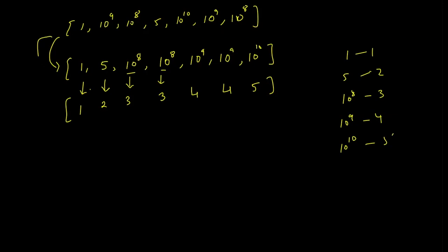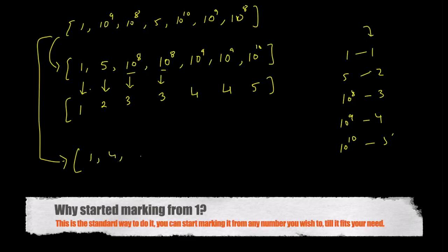Now you come back to the original array and instead of 1, write whatever the value it means. So 1 means 1, 10 to the power 9 means 4, 10 to the power 8 means 3,